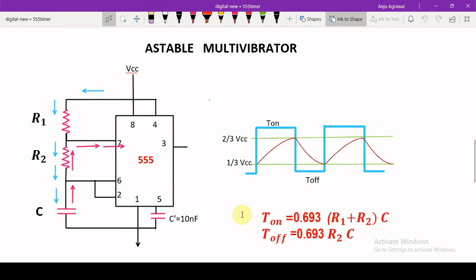In order to get other duty cycles, if we want to have our duty cycle equal to 50% or less than 50%, then we have to modify this circuit by adding a diode, and we will see the demonstration of that circuit in our later video.